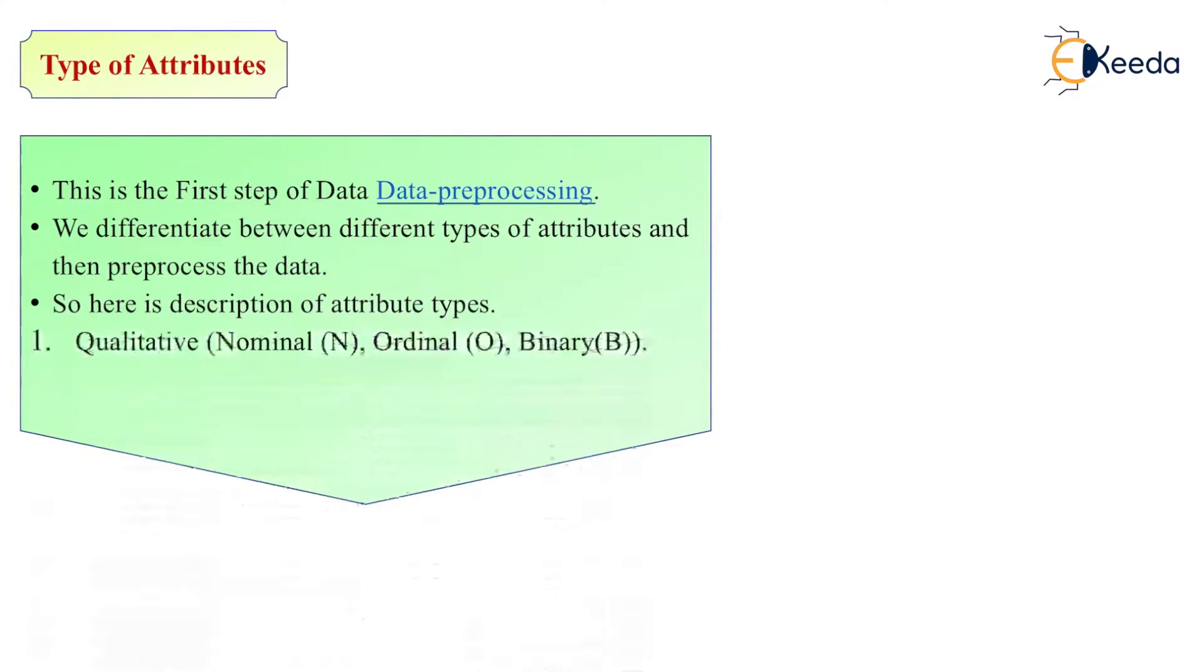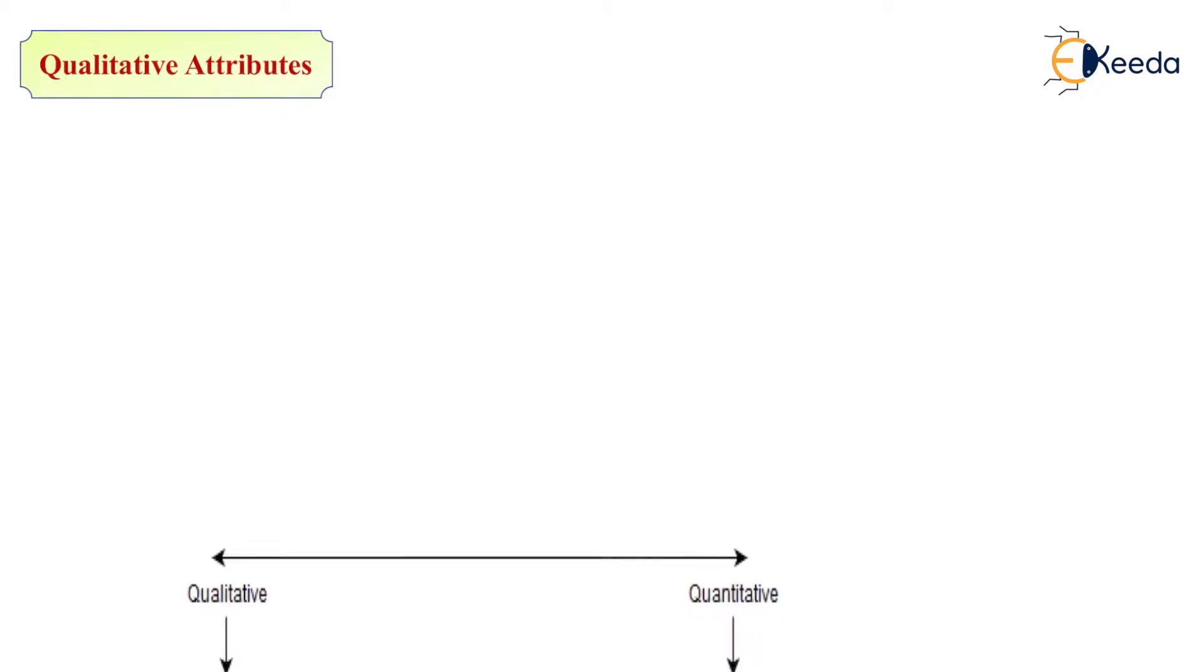First is qualitative. In qualitative, we are having three attributes: nominal, ordinal, and binary. Second is quantitative, that is discrete and continuous. Now we will see the diagram.